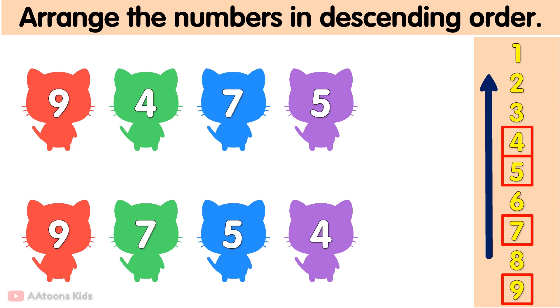So finally, descending order of 9, 4, 7, 5 is 9, 7, 5, 4.